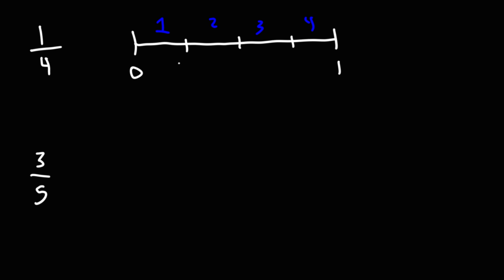And now we can list the fractions in increasing order. So 0, this is going to be 1 over 4, 2 over 4 which is 1 half, and 3 over 4. So we're looking for 1 fourth, we could place it right here.